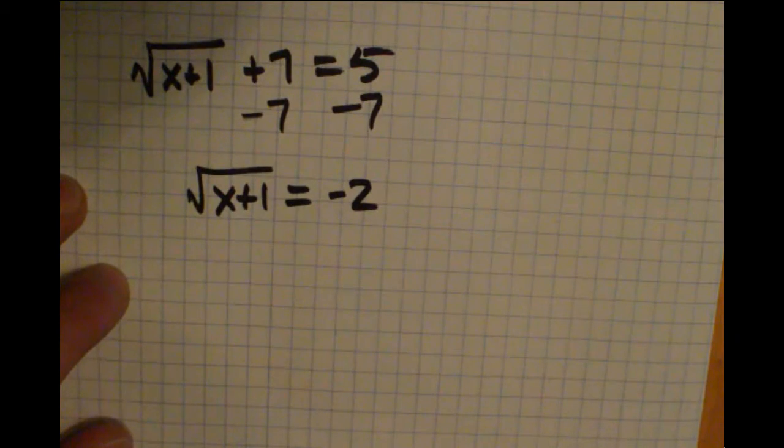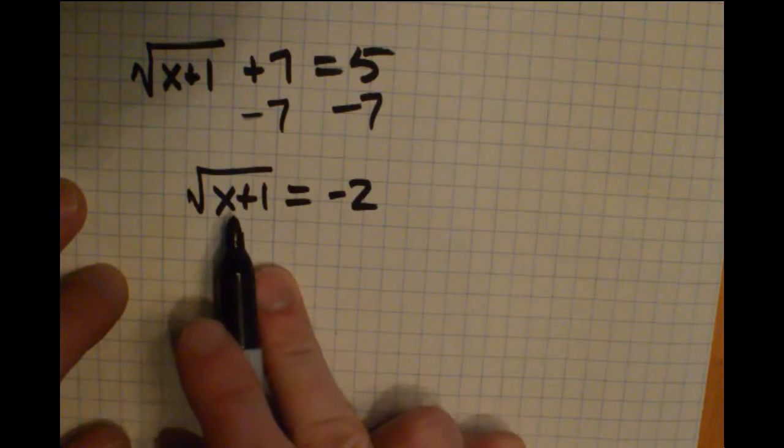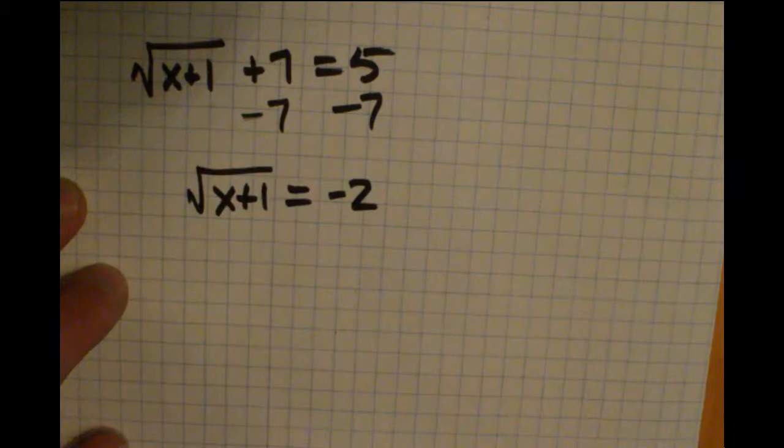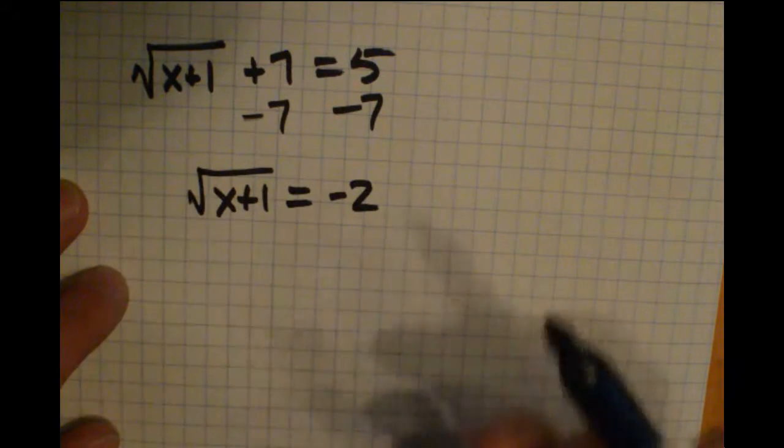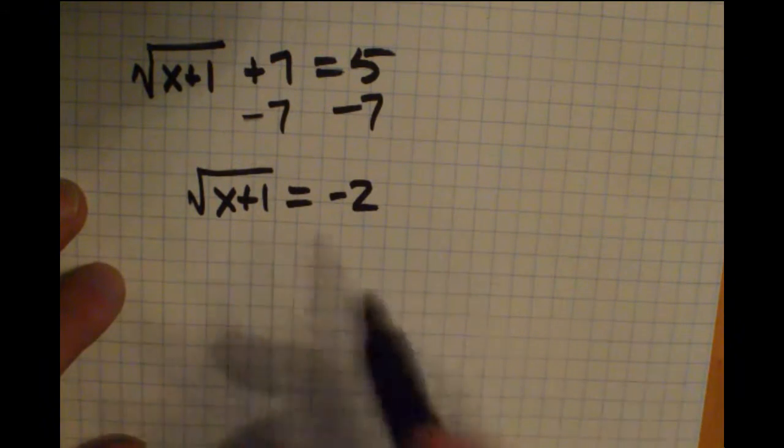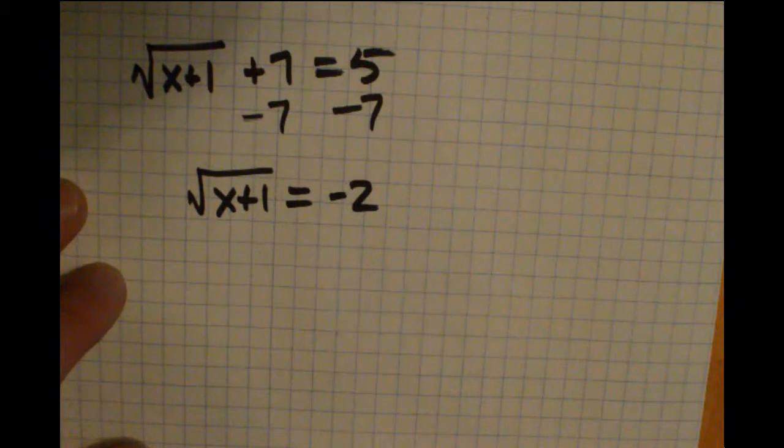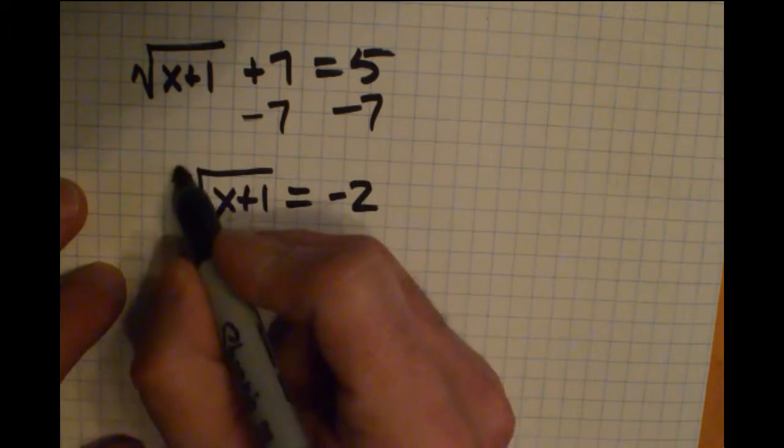And something might look already kind of fishy. I'm taking a square root of a number and getting a negative. Well, this is looking at a positive square root. Couldn't come out as a negative number. So I don't think I'm going to get a valid solution here. But we'll keep going anyway.